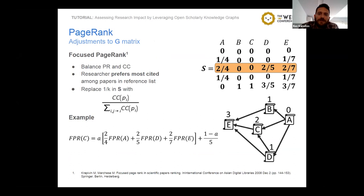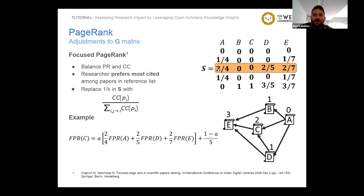The first PageRank-based method is called focused PageRank, developed to provide a measure between PageRank and citation count. The idea is to modify the behavior of the random researcher so that instead of choosing any paper in the reference list with equal probability, they prefer more highly cited papers. Instead of 1 divided by k in each non-zero entry of the stochastic matrix S, we use the fraction of total citations of all cited papers in the column. For example, for paper C receiving a citation from paper A, which cites papers B, C, and D for a total of four citations — two going to C — paper C receives two-fourths of paper A's PageRank score.